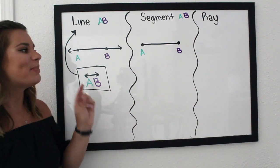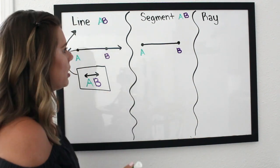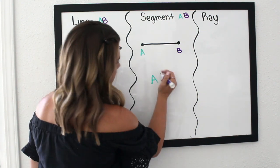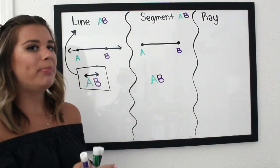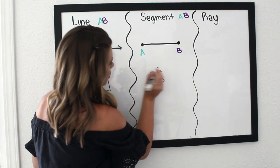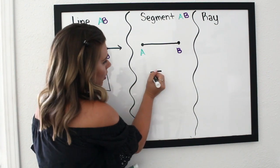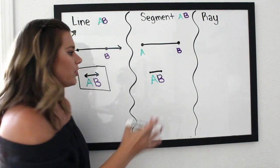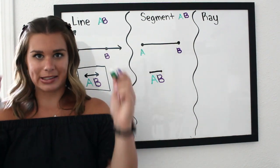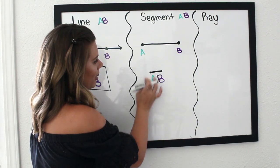The notation for a segment is similar to a line but different — I need to tell the reader it stops at those endpoints. You write AB again, but above the letters you draw a little bar with no arrows. You can do a plain line without arrows, or even add little endpoint marks. This notation means segment AB — it stops at those endpoints.